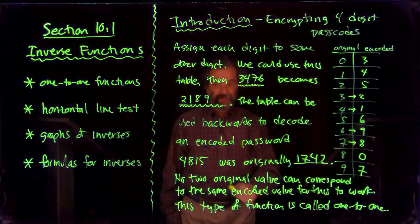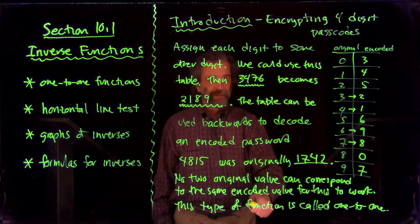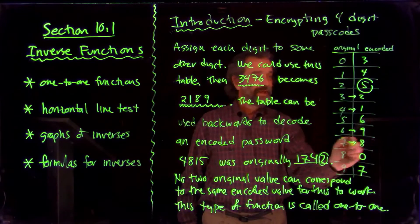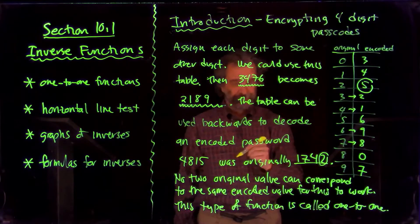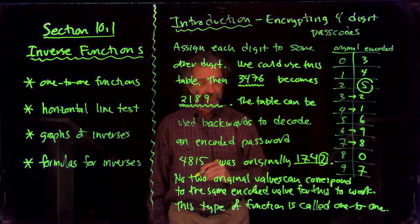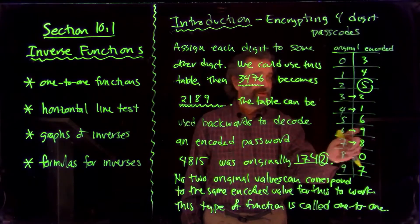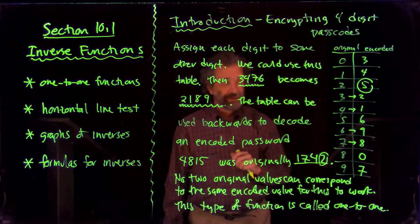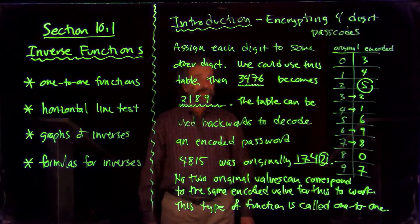Now, for this to work, we can't have two original values corresponding to the same encoded value. When I'm looking up five, here's a five here, and I said the five came from a two. If there were two fives on this side, I wouldn't know which one it came from — I wouldn't be able to decode it. So each encoded value corresponds to exactly one original value. No two original values can correspond to the same encoded value for this to work. This type of function, where there's only one choice of x for a given y, those kinds of functions are called one-to-one functions. And you can see, if you wanted to go backwards in this encoding process, the encoding table has to be one-to-one.